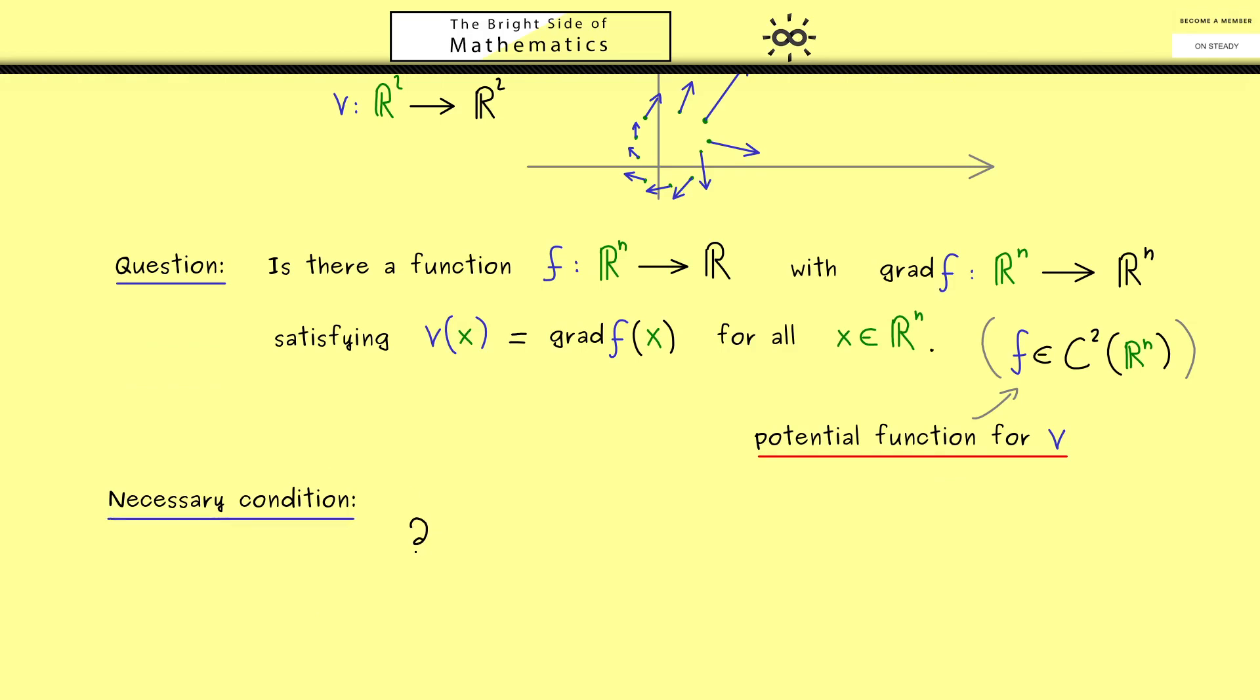So let's start with the partial derivative of one component of V. So we take the i-th component of V and form the partial derivative with respect to x_j. So this means, we have the i-th component here of the gradient of f. However, you know, the gradient is formed out of partial derivatives. In other words, instead of the gradient, we can write a partial derivative here. So this thing here is the partial derivative of f with respect to x_i.